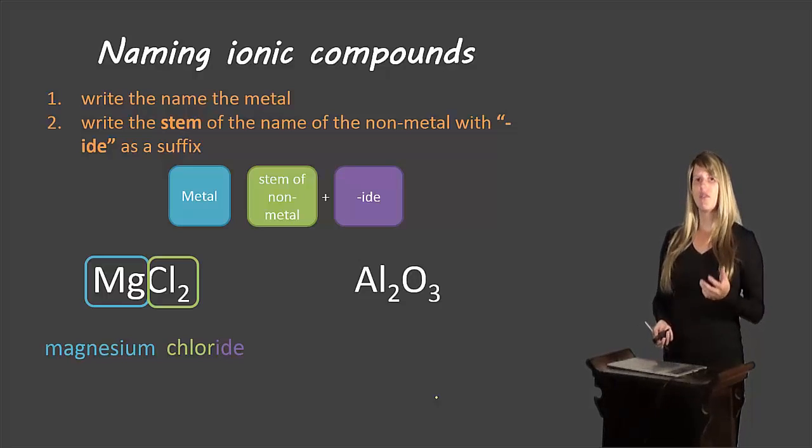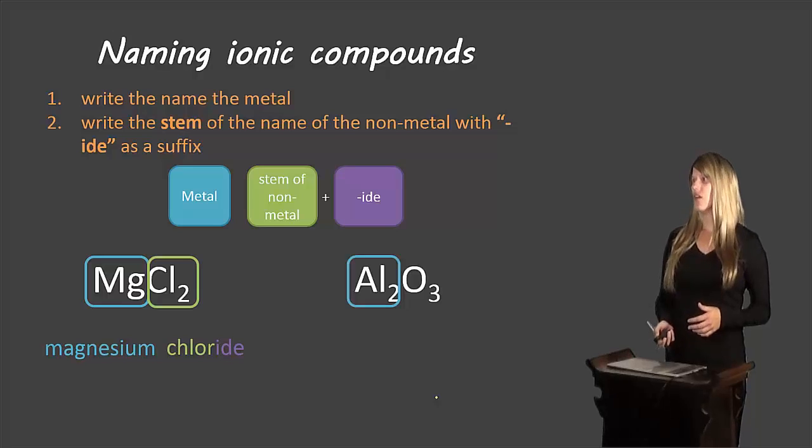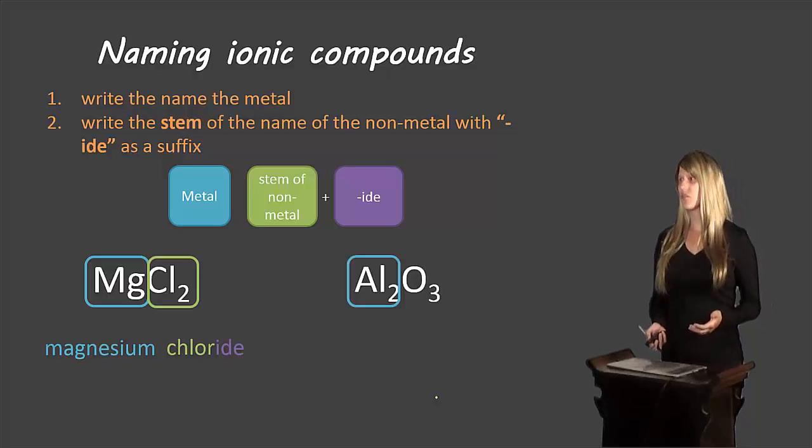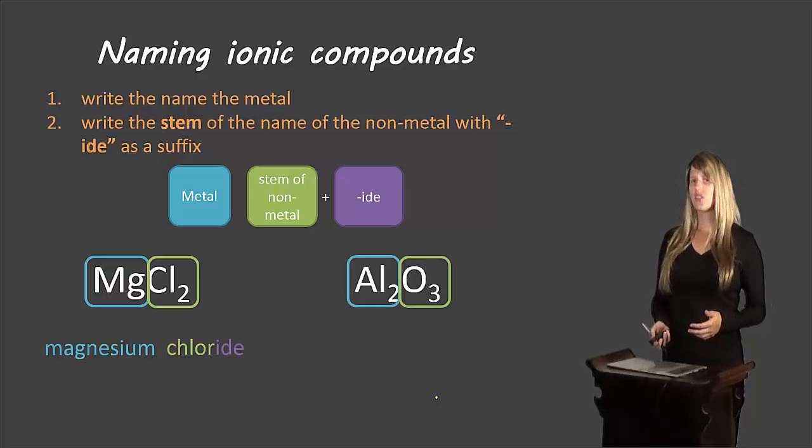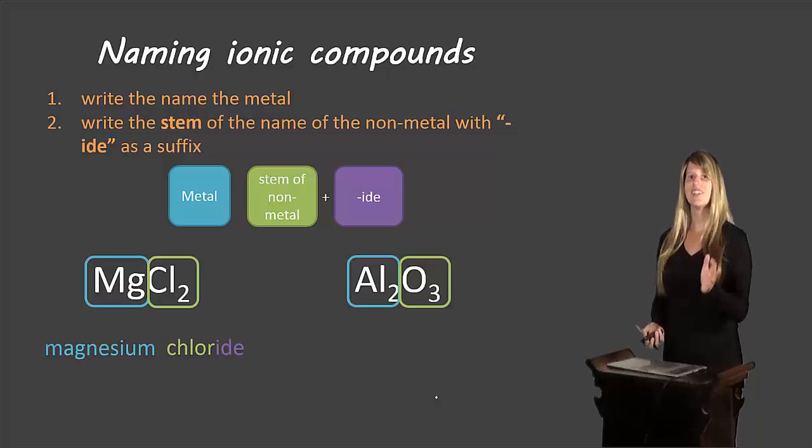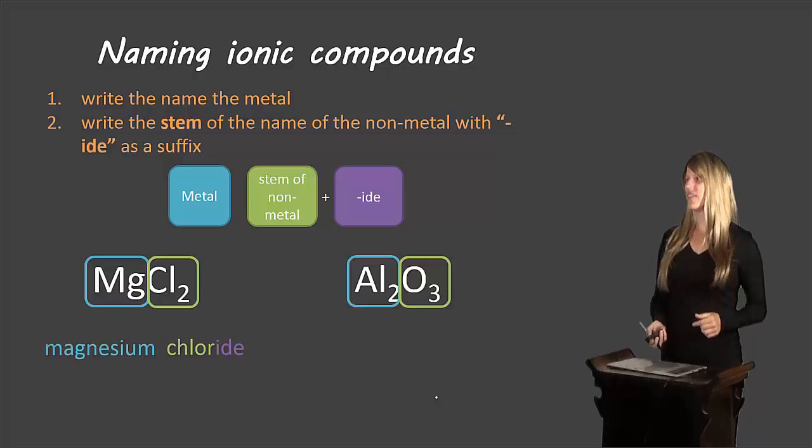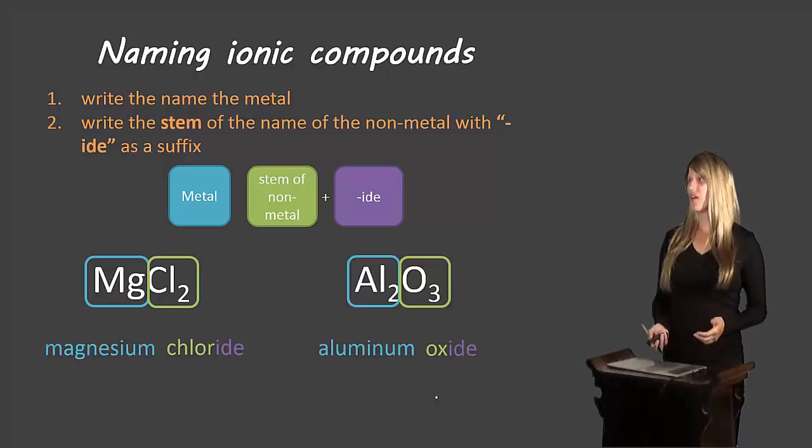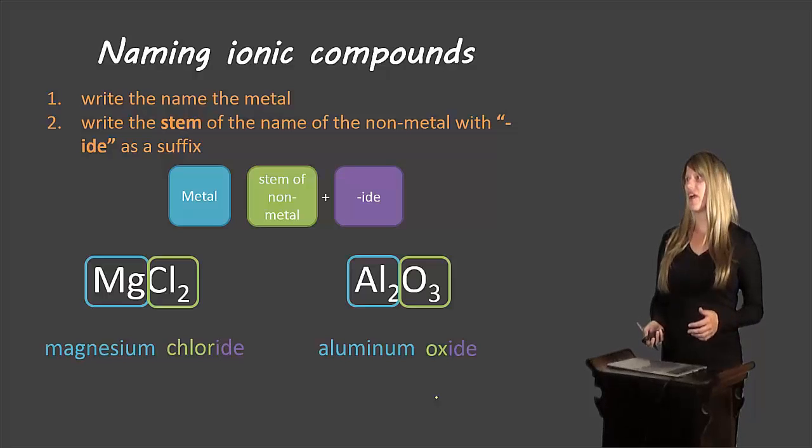Let's look at another example. We have aluminum and oxygen. Aluminum is our metal, which will stay the same, and oxygen is our non-metal. Oxygen, the stem is ox. So we'll get rid of the i-gen and just leave ox, and then we'll add the final suffix i-d-e. So we end up with aluminum oxide. So that's how we would form these types of compound names.